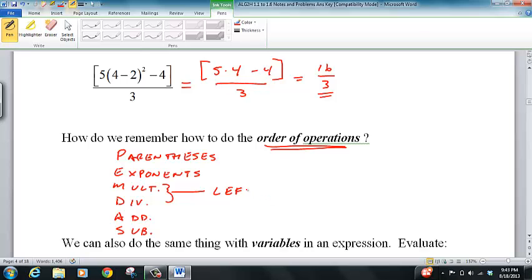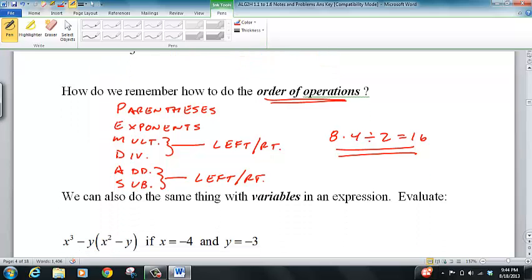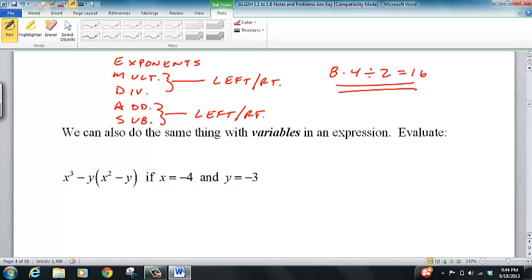The caveat is that multiplication and division are done left to right, so neither one really ranks above the other. Same thing for addition and subtraction. A good example would be eight times four divided by two. You go eight times four is thirty-two, divided by two is sixteen. If you did four divided by two first, you'd get the wrong answer.